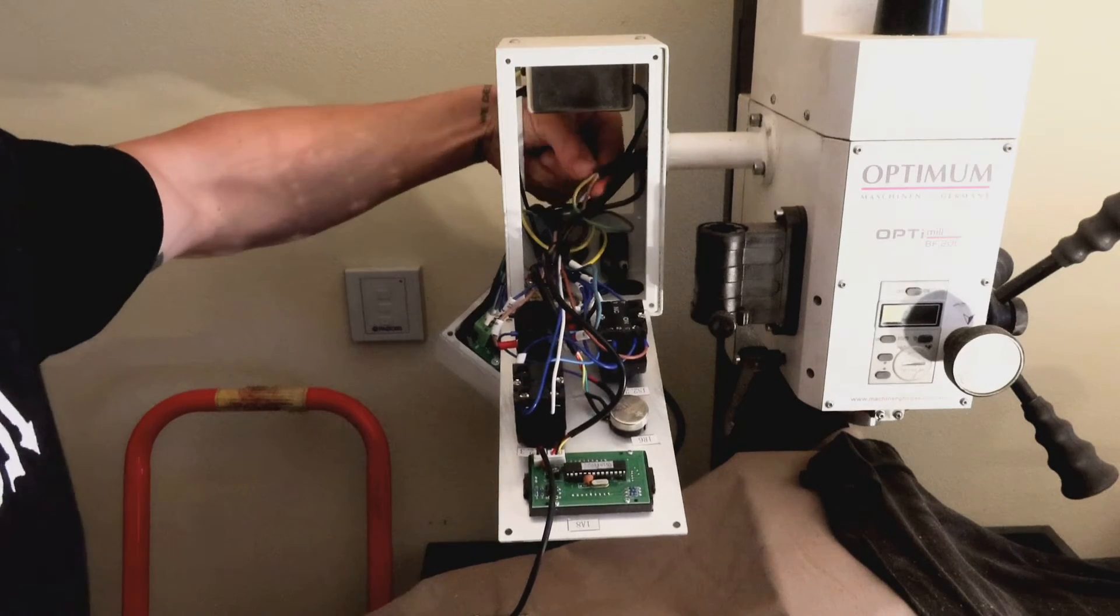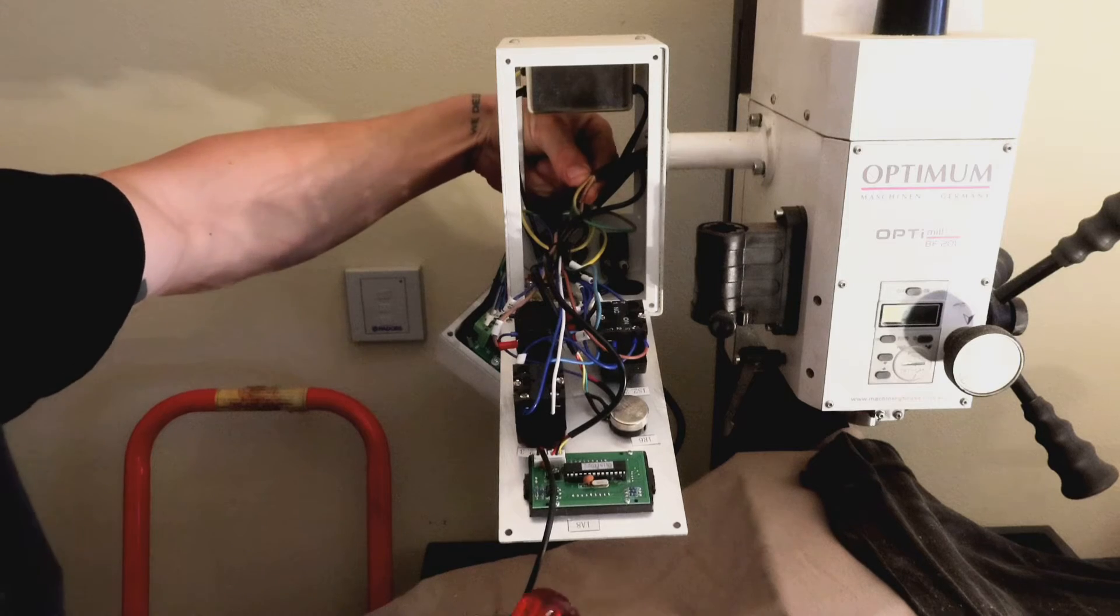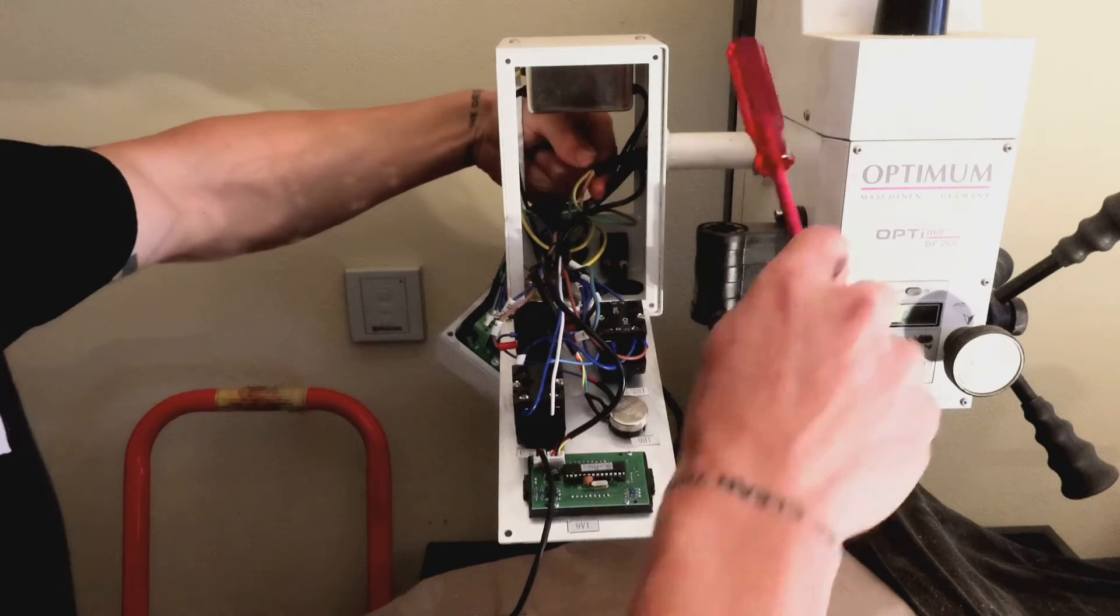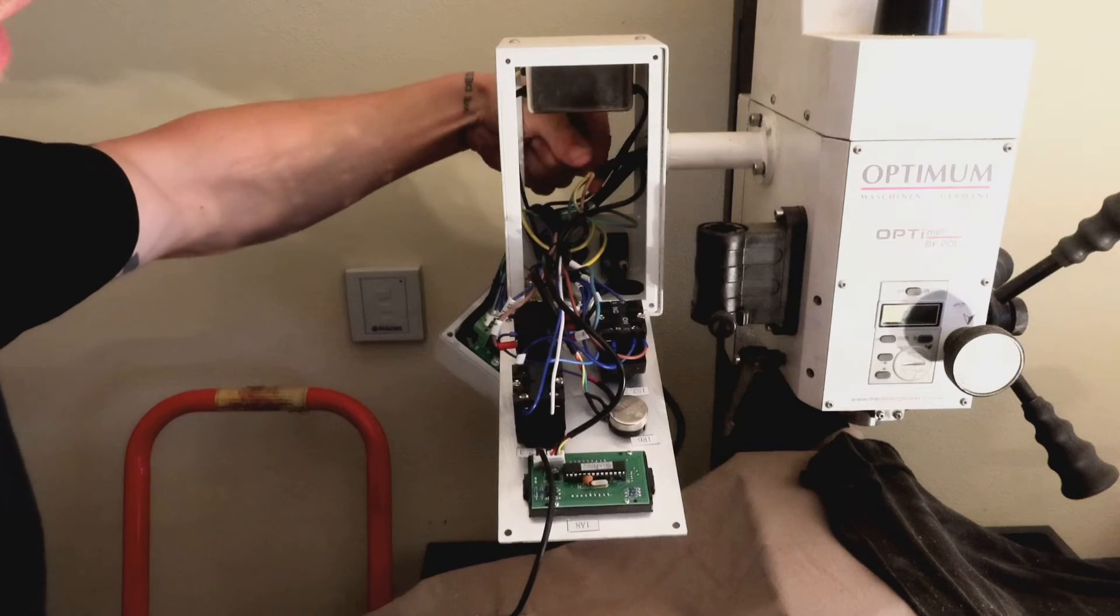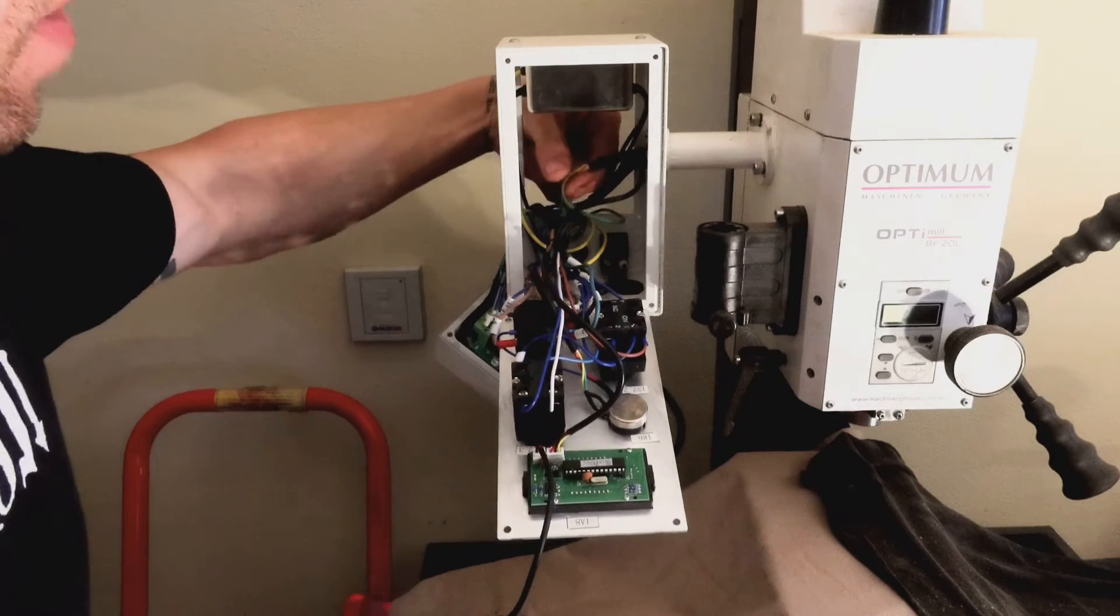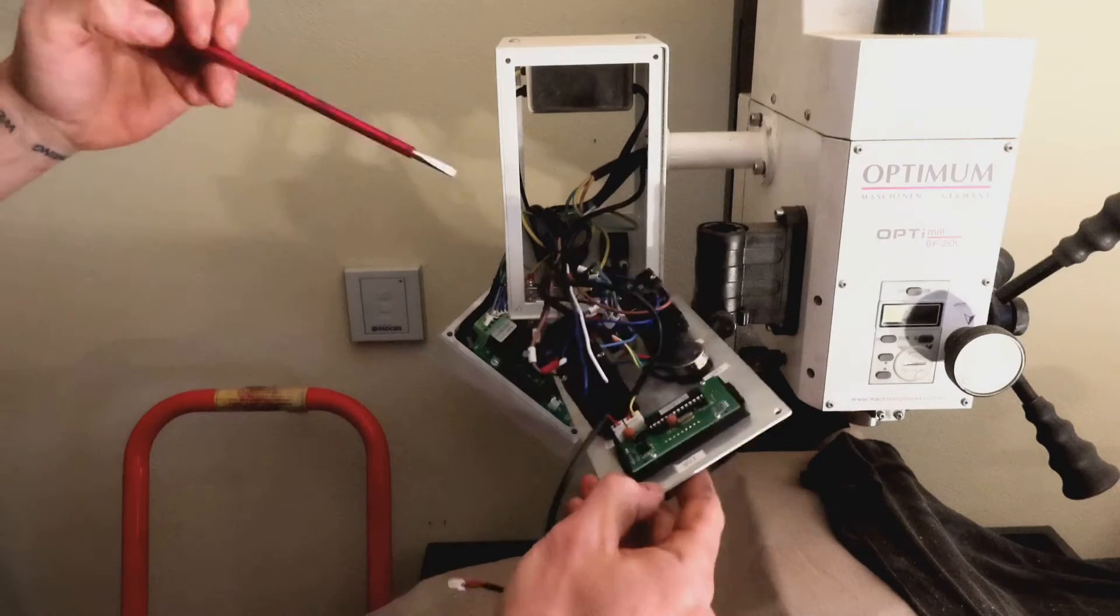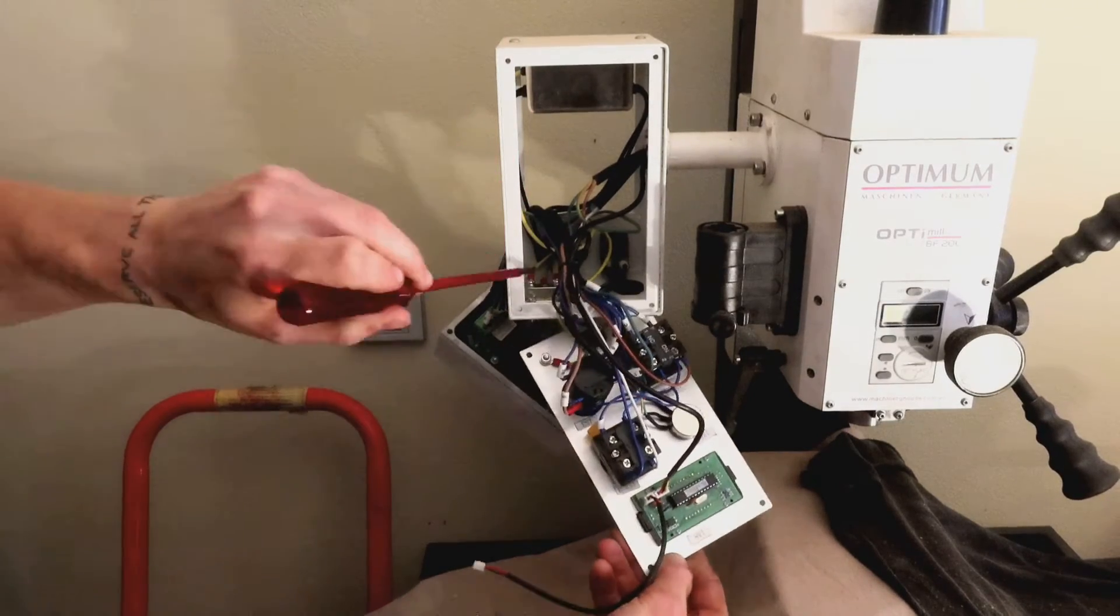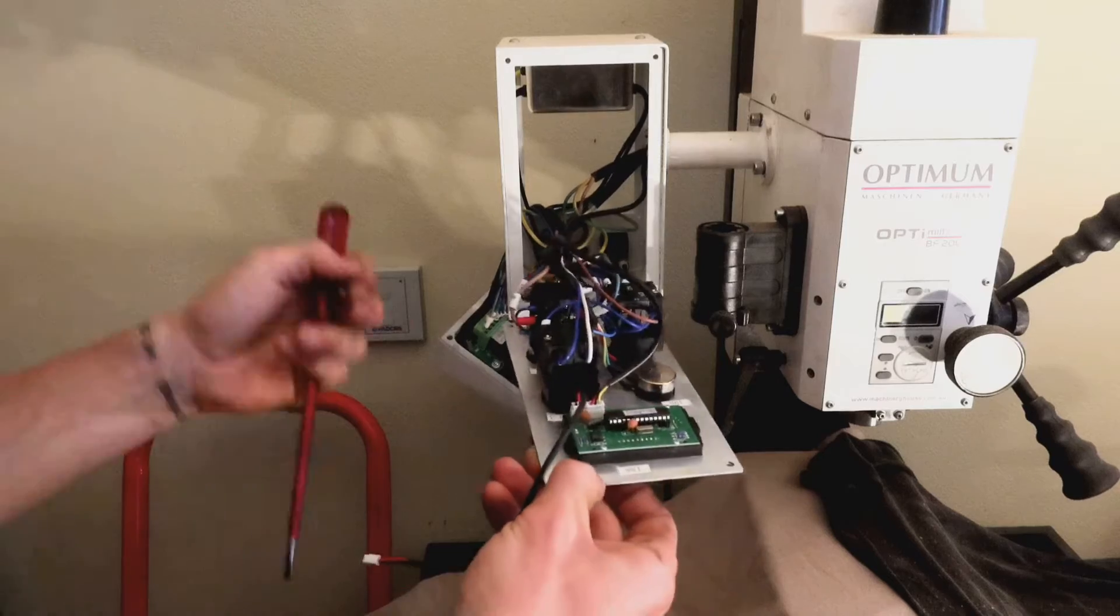All right, I'm going to start with the three core with just the AC color coding. So that coming out of the headstock through this little pipe here. We've got a green yellow, we've got a blue and a brown. So green yellow goes to the ground bus bar down the bottom here, which I think is pretty obvious.